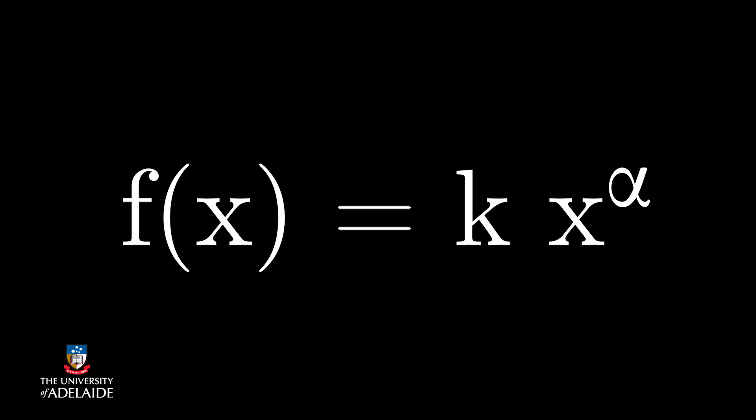A power law distribution has a form f(x) equals k times x to the power of alpha, where x is a variable of interest, alpha is a law exponent, and k is a constant.